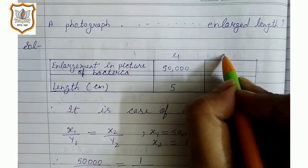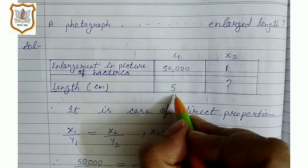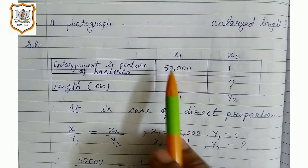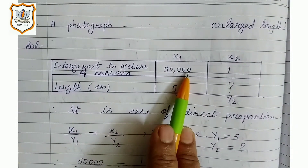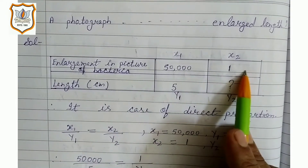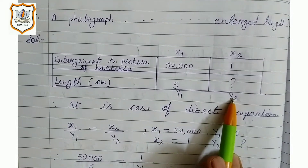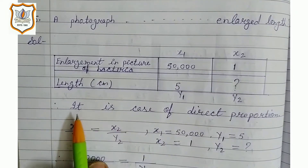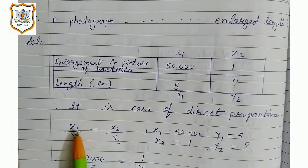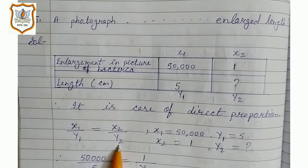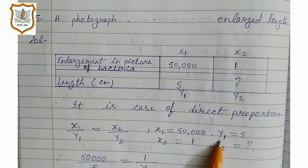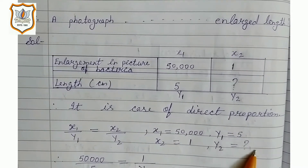50,000 is x1 and 1 is x2; 5 is y1 and we will find y2. If it is enlarged 50,000 times, then its length is 5 centimeters. If we have 1 time, then its length is less — the length decreases. So we can say it is a case of direct proportion. Now solve: x1 upon y1 is equal to x2 upon y2. x1 is 50,000, x2 is 1, y1 is 5, and y2 we will find.